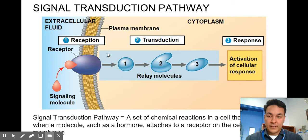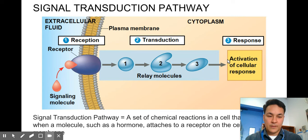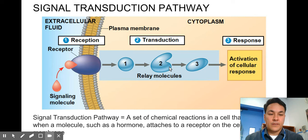Some other examples: epidermal growth factor is going to dock, be transduced, and cause genes to be read — and those genes are going to say, let's divide or make some more cells. Another example is insulin: insulin is going to come in, be transduced, and the response is going to be to uptake glucose. There are a myriad of examples.